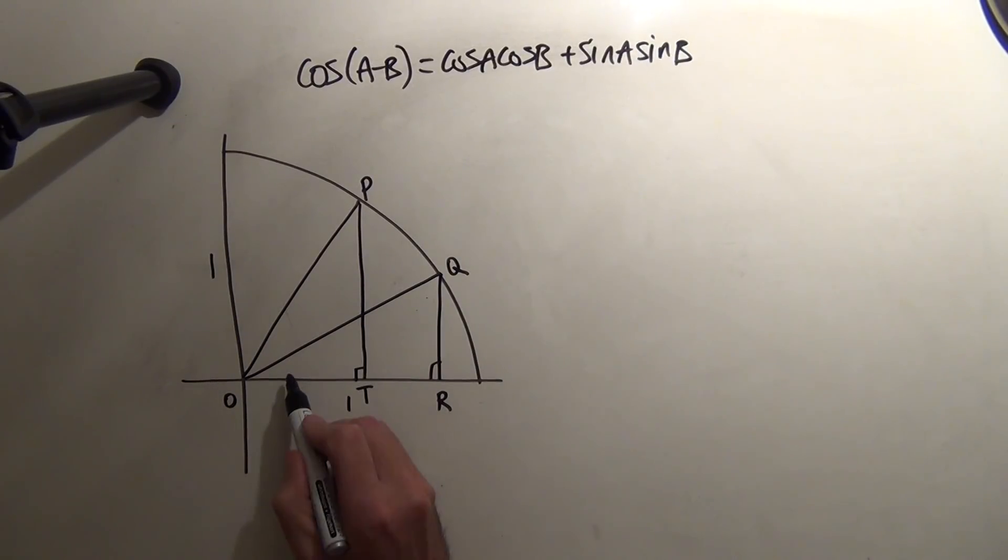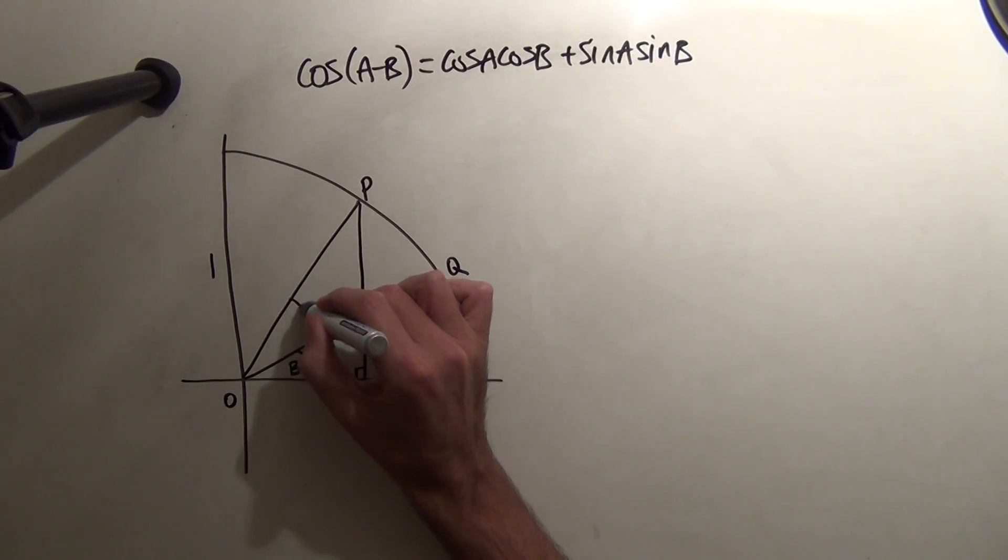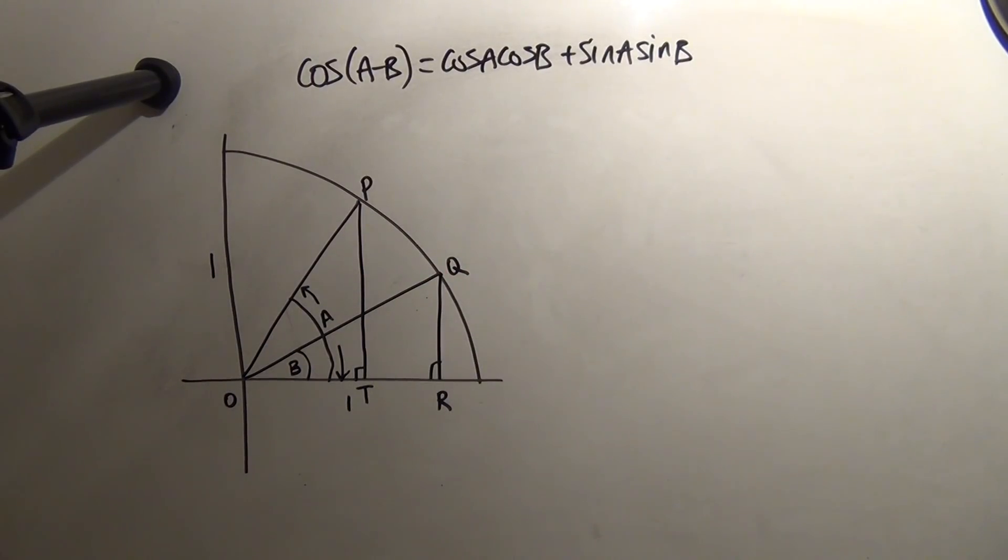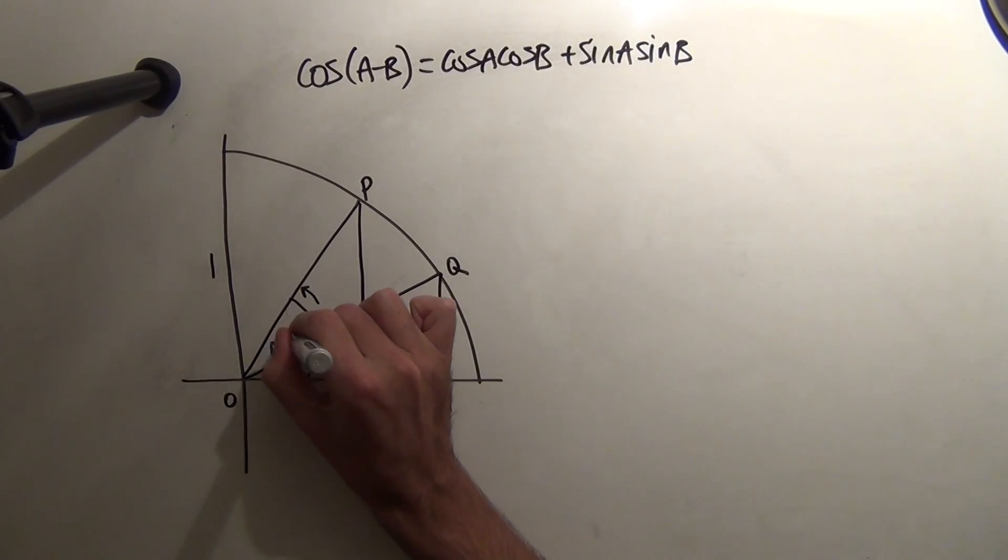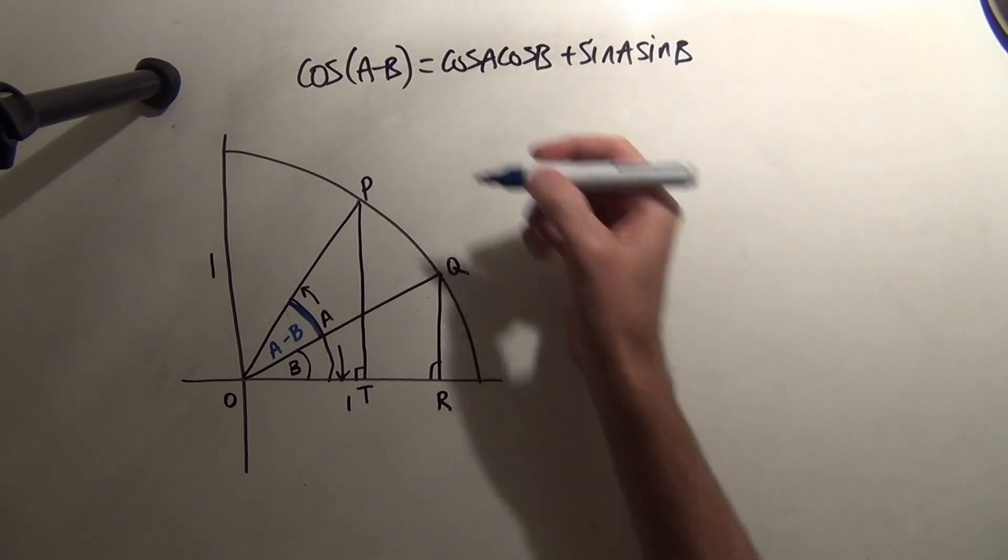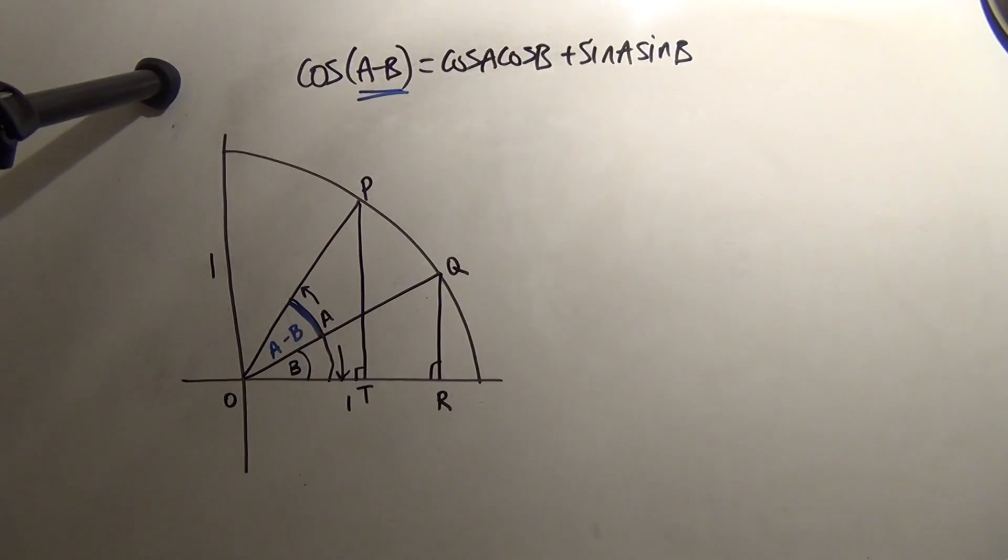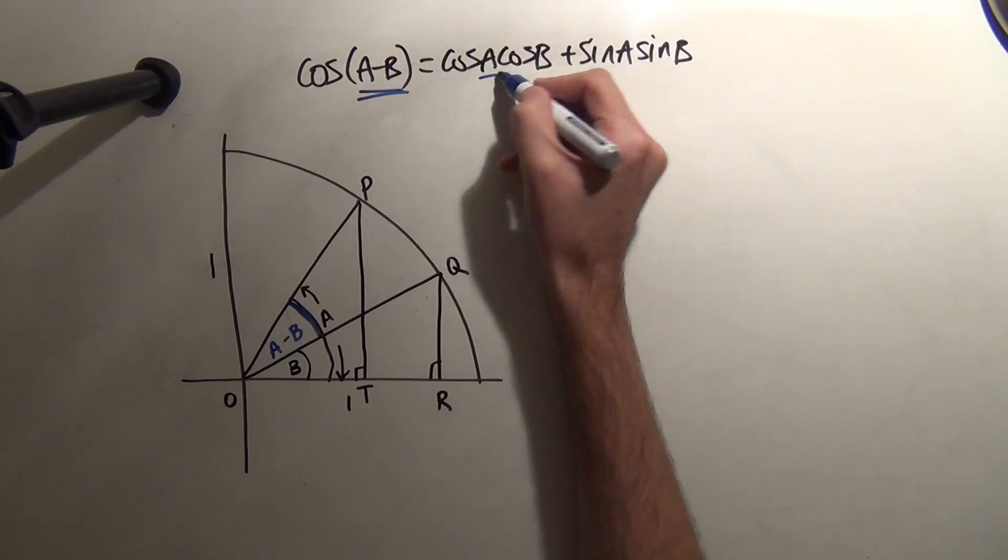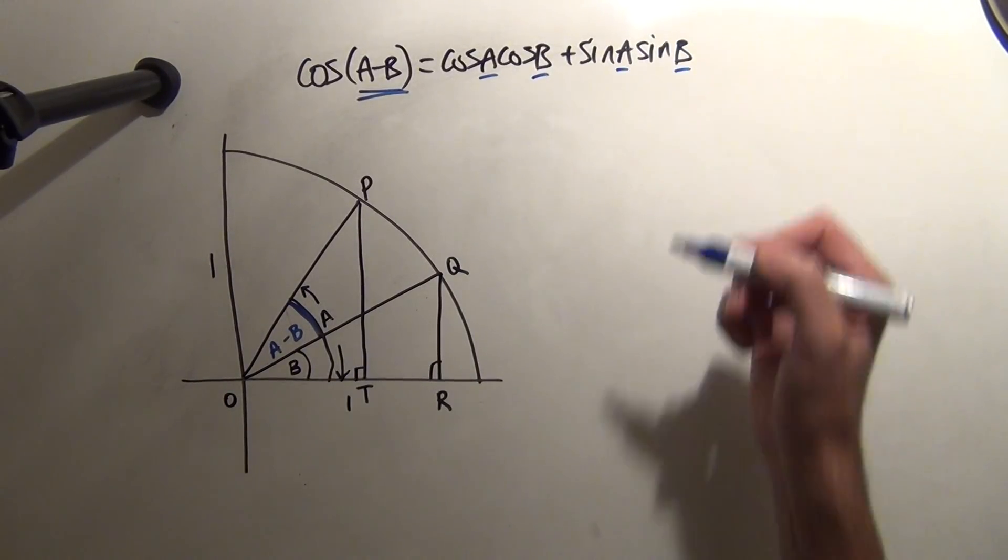I'm also going to label this angle here B, and this angle here A. So I can create, first of all, an angle A minus B here, because it's A with B taken off. Now that's quite important, because that's really the first part of our formula here. Although I've got A's and B's also, so I'm getting something right.